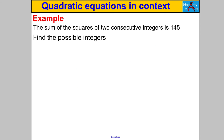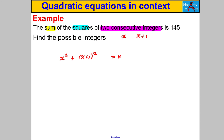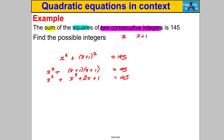Next one — pause the video and have a go. We're told the sum of the squares of two consecutive integers is 145. Let the first integer be X and the consecutive one be X + 1. We're told X² + (X + 1)² = 145. Now (X + 1)² means (X + 1)(X + 1), so expanding: X² + X² + 2X + 1 = 145.